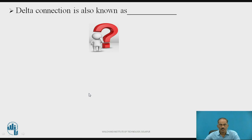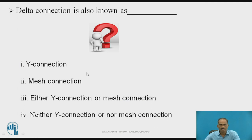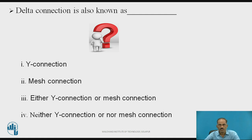Here is a reflection slide. Delta connection is also known as — the options are: Y connection, mesh connection, either Y connection or mesh connection, or neither Y connection nor mesh connection. Pause the video, try to think and answer. The delta connection is also known as mesh connection, because a delta connection has a closed loop or mesh path.